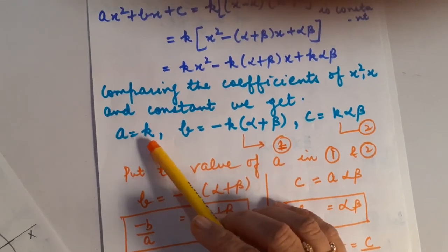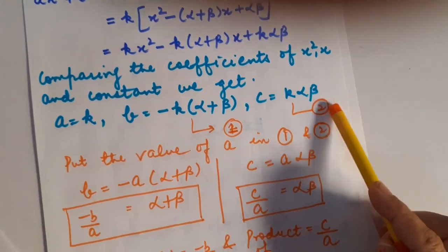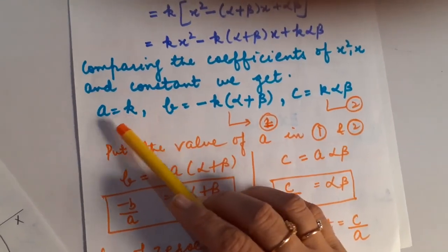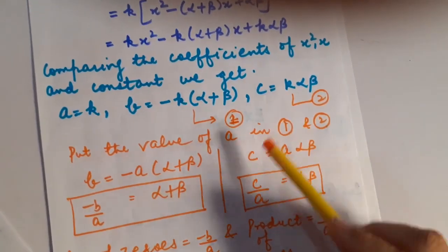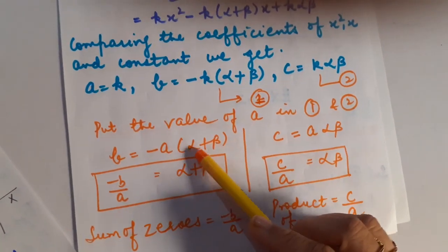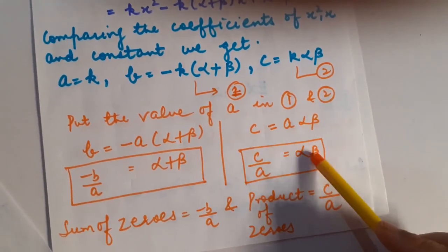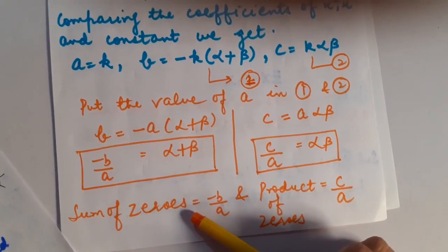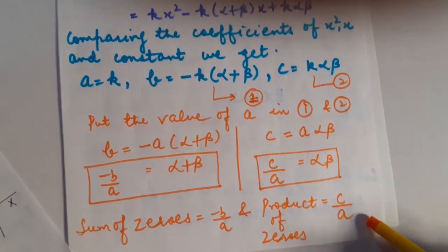Substituting the value of k into the expressions, I get B equals minus A times (alpha + beta), so alpha plus beta equals minus B by A. And C equals A times alpha·beta, so alpha times beta equals C by A. So the sum of zeros equals minus b by a, and the product of zeros equals c by a.